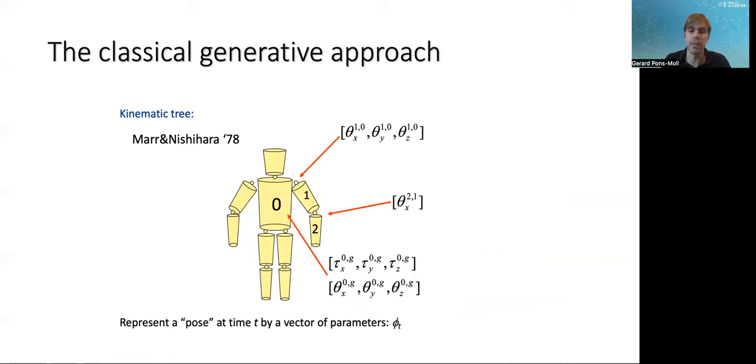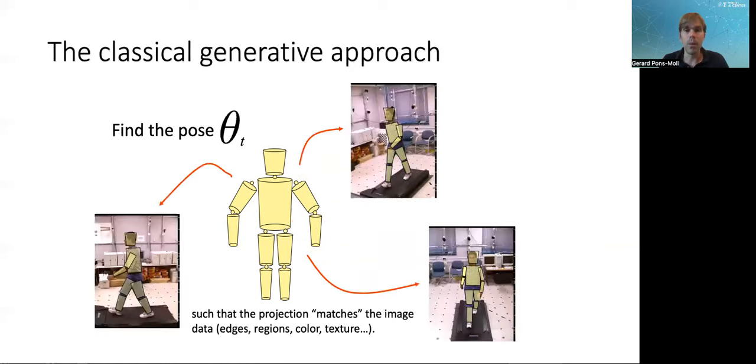Basically the posture of the person is parameterized with a set of joint angles. Then once you have this model and you have observations, you can fit this model to the images by extracting features and comparing this model to image features. That might be, as I was saying, distance transform, edges or whatever you can synthesize and extract from the image.